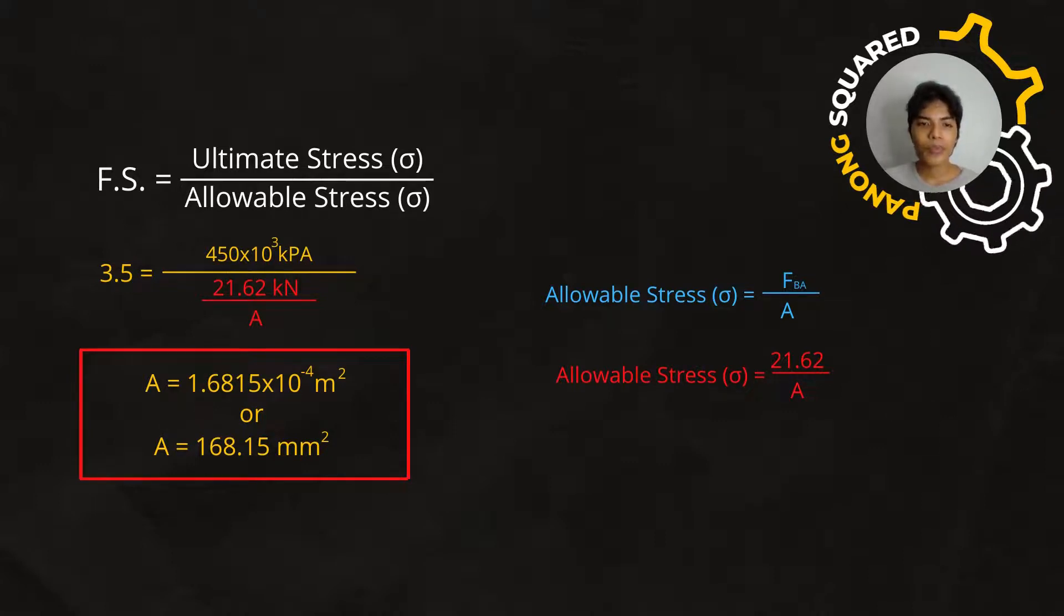So, we now have 3.5 for the factor of safety and for our ultimate stress that is equal to 450 MPa. But we're going to write it as 450 × 10³ kPa. Over the allowable stress, we have the 21.62 kN over A. So, the unknown here is the area. By simplifying the equation, we can have the value for the cross-sectional area equal to 1.6815 × 10⁻⁴ meters squared.